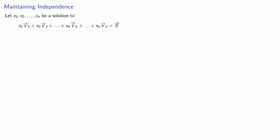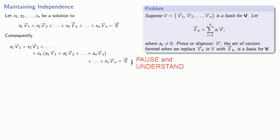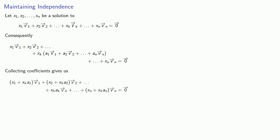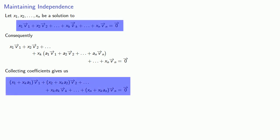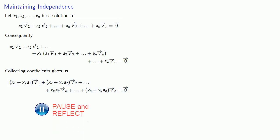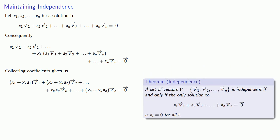We know that v tilde k is equal to something, so let's substitute that into our equation and collect our coefficients and simplify. One useful observation is that we went from a linear combination of the v prime vectors to a linear combination of the v vectors. We know the v vectors form an independent set, so the only solution to a linear combination equal to 0 is to have every coefficient equal to 0.